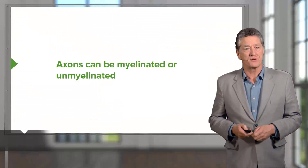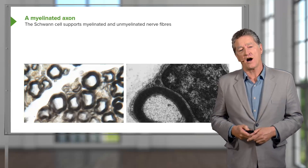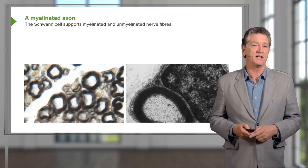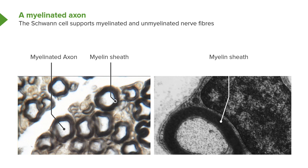Axons can be myelinated or unmyelinated. Here is a high magnification image on the left-hand side of a nerve that's been treated by a fixative where the myelin has been retained. You can see the axon is a very clear structure surrounded by a myelin sheath staining black here. On the right-hand side you can see the myelin sheath viewed by an electron microscope — it's made up of lamellae, sheets and sheets of myelin. And on the right-hand side of that you can see an axon.